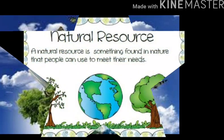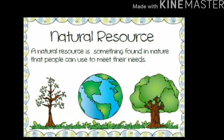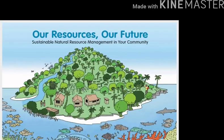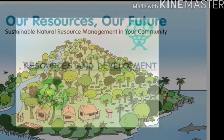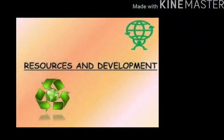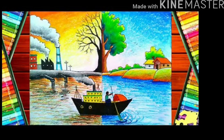Precautions should be taken to conserve all natural resources. Renewable resources like solar and wind energy should be used as an alternative for commercial purposes. This would help in the conservation of natural resources, thus protecting mankind and other living creatures on the earth. When there is no proper conservation of resources, it not only affects human beings but also our environment.